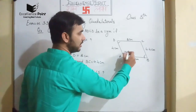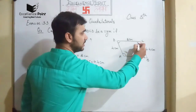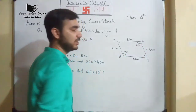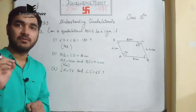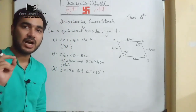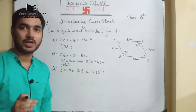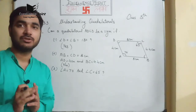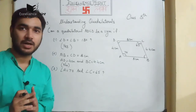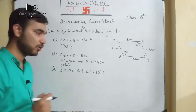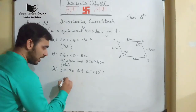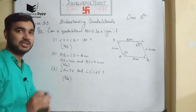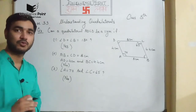For the last condition: angle A is equal to 70 degrees and angle C is given as 65 degrees. This is not possible because opposite angles of a parallelogram are equal. Hence it is not possible, so the answer is no. We have finished with the third question.